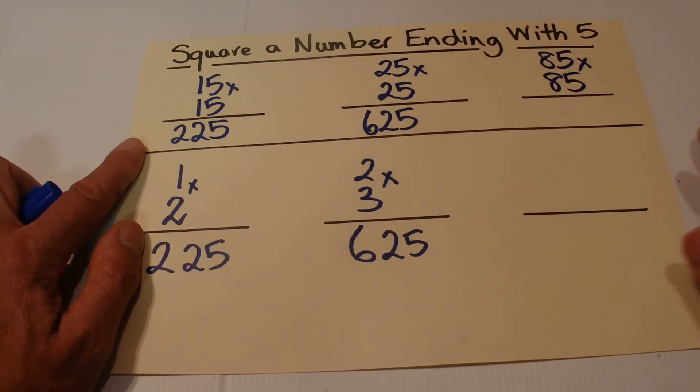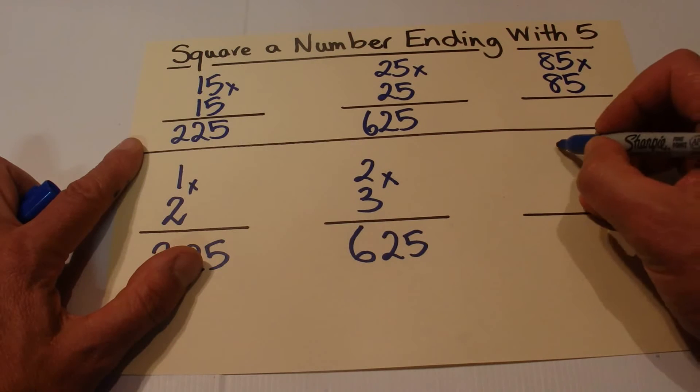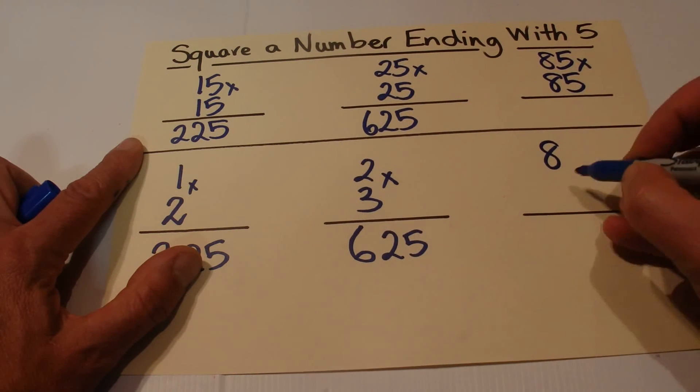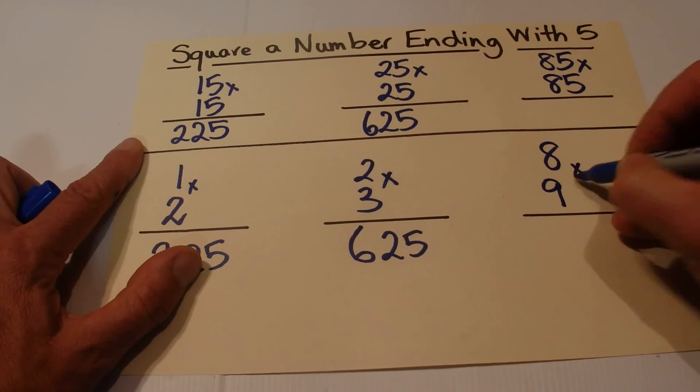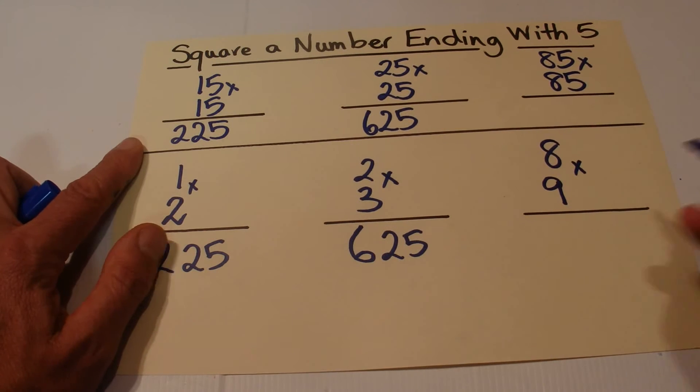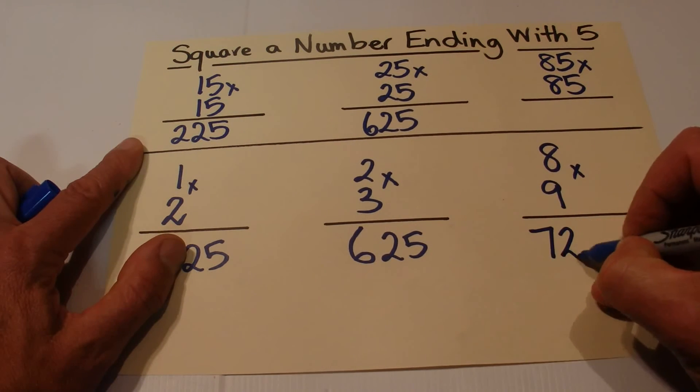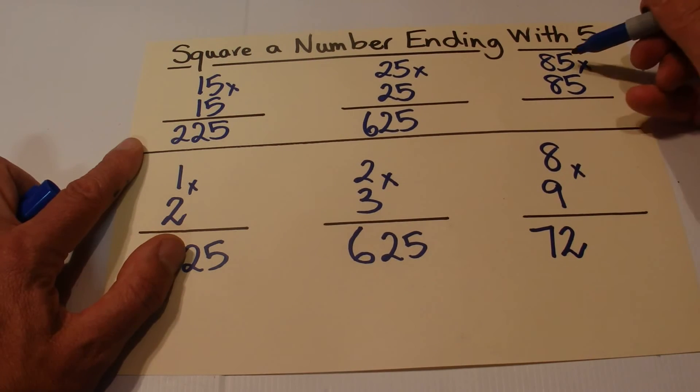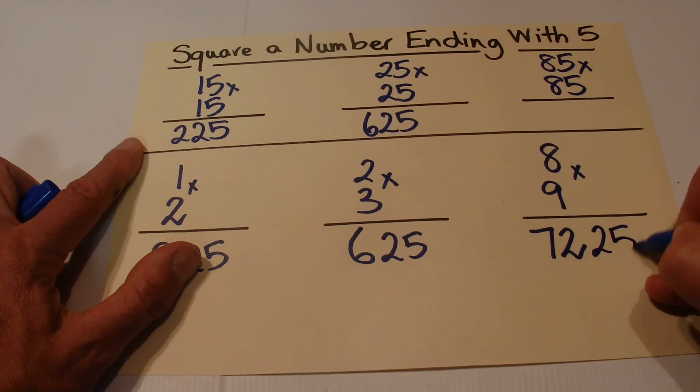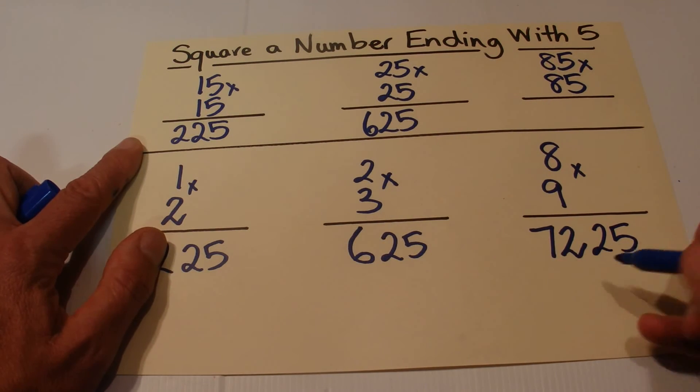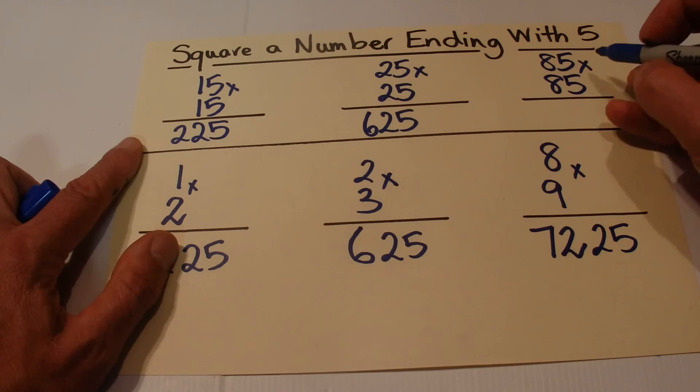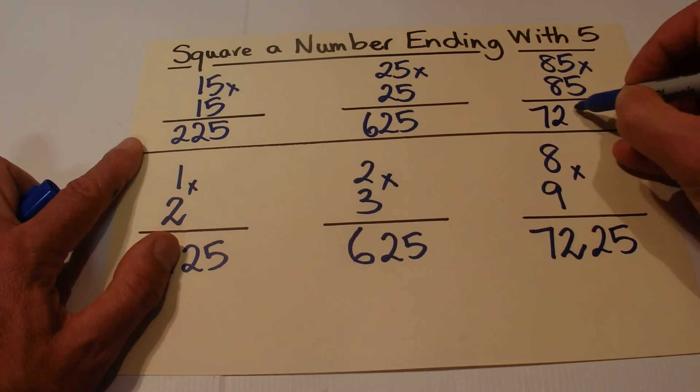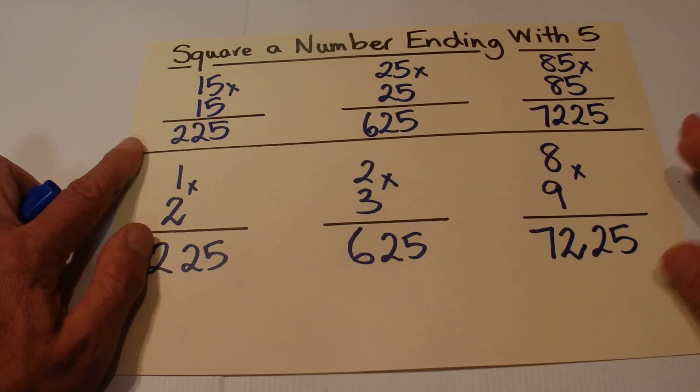85 squared, which is 85 times 85. So we get the 8 and increase that by 1 and it becomes 9, so 8 times 9 and that is 72, straight from the times table. And 5 times 5 is 25, add that on the end to the 72, so the answer to 85 squared, 85 times 85, is 7,225.